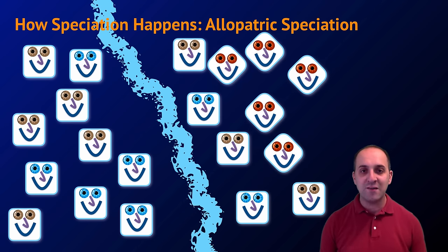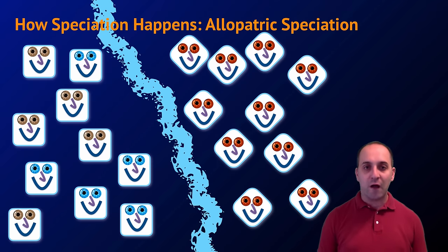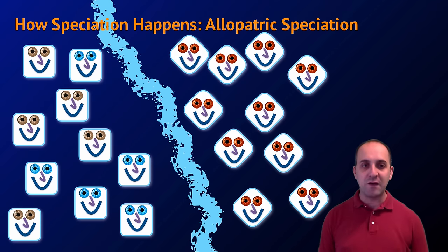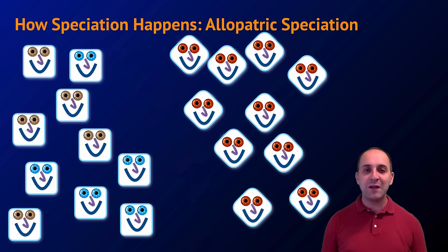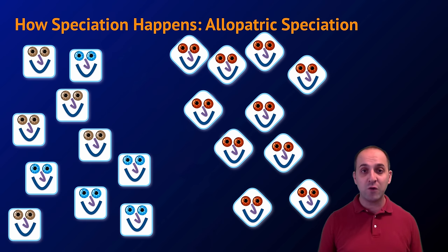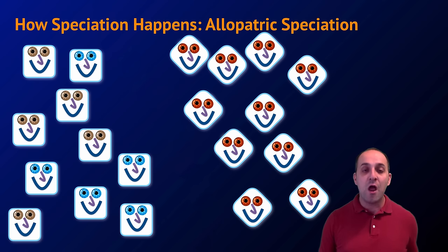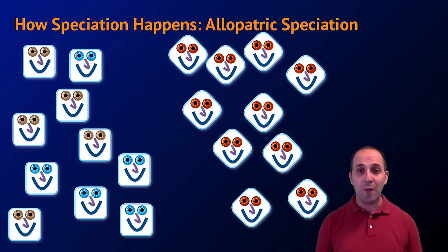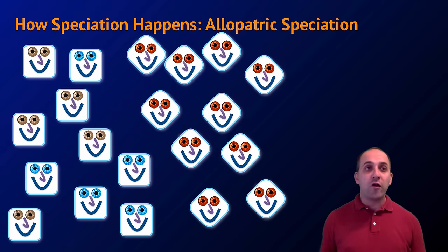The population on the right has undergone a series of genetic changes that have really changed their appearance and made them markedly different. If that barrier disappears or those two populations come back together in the future, if enough changes have accumulated, these two populations will no longer reproduce with each other — they have become separate species. That's allopatric speciation: no matter how close we bring them, if they won't reproduce with each other, they are separate species.